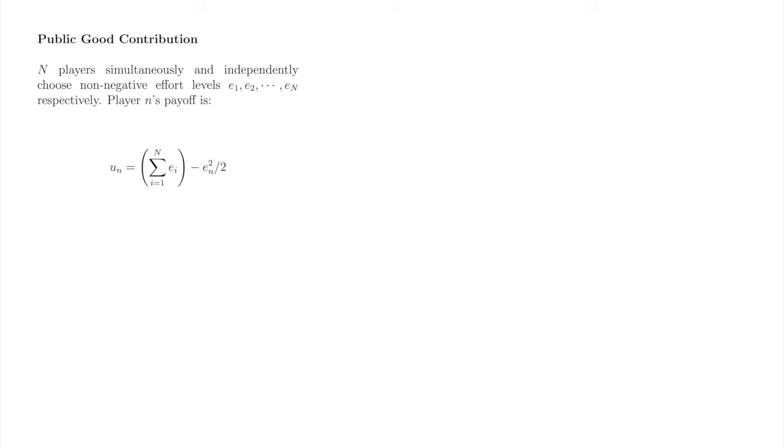Player little n's payoff function captures these two important features of a public goods game. First, the sum of all players' efforts represents that player little n benefits from the total effort exerted collectively by all players. The negative quadratic term minus en squared over 2 represents that player little n feels only the cost of her own contribution.